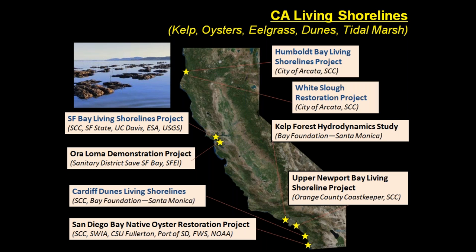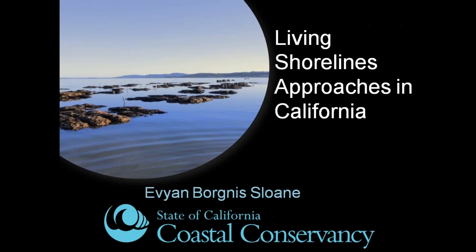Here's a map of several living shorelines efforts occurring statewide. Evan and Joel will refer back to the shoreline typology and habitat types being incorporated into project designs. The projects in blue will be discussed next, starting with Evan Sloan and the San Francisco Bay Living Shorelines Project. My name is Evan Sloan and I'm another project manager working at the Coastal Conservancy. Today I will discuss two living shoreline case studies in California.